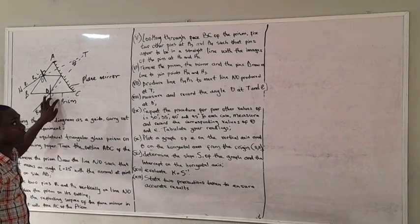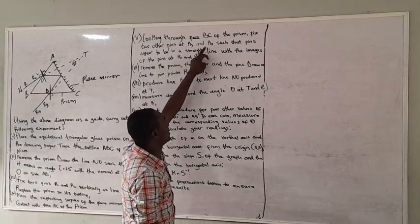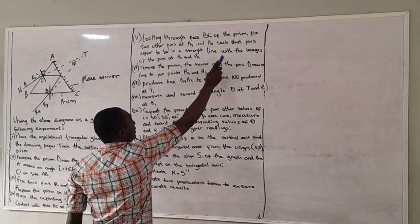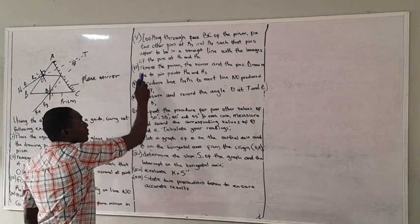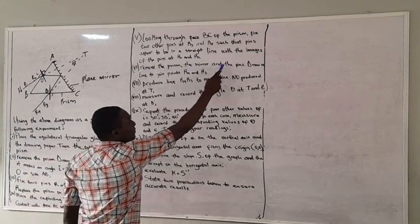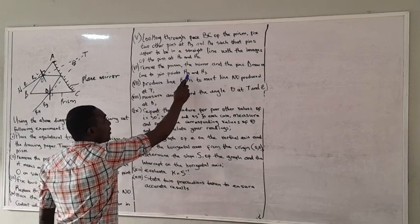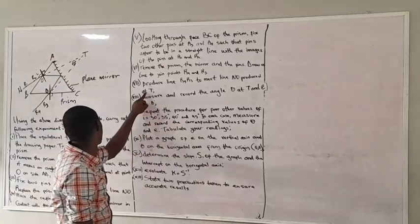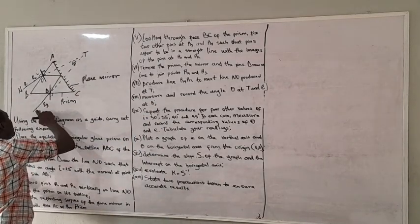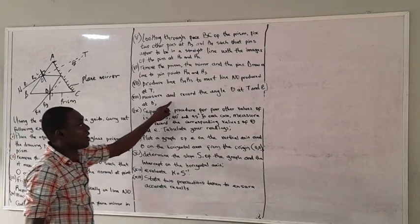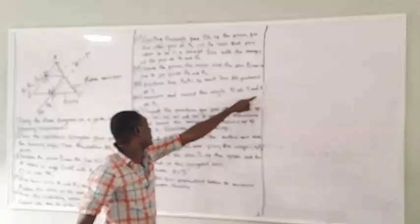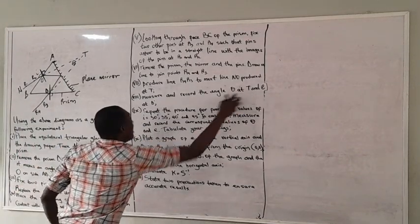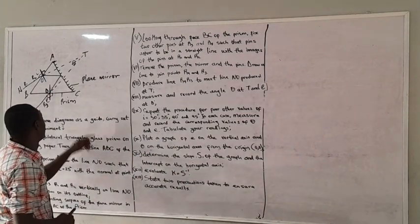You look through the side of the prism and face two other pins at R3 and R4, such that the pins appear to be in a straight line with the images of the pins at R1 and R2. Remove the prism, the mirror, and the pins. Draw a line joining points R4 and R3, and produce it to meet line NO produced at point T. Measure and record angle theta at T and the emergent angle E at point D.